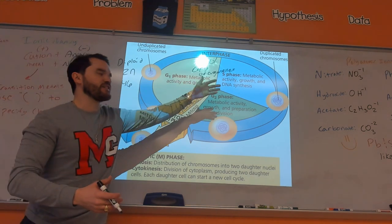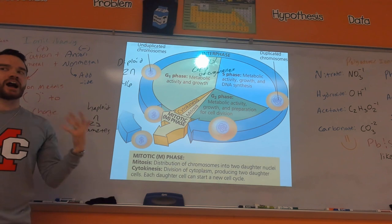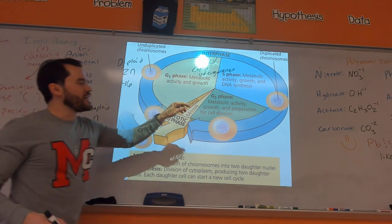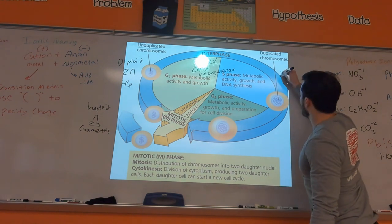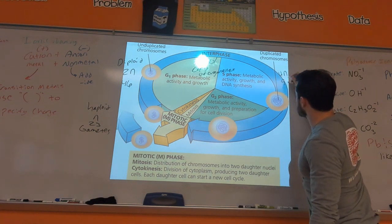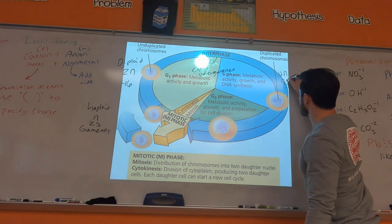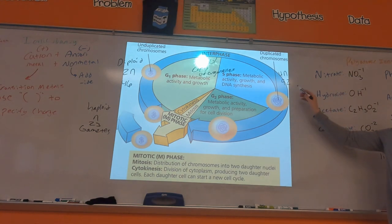In S phase, you're going to make a copy of all the DNA. Otherwise you would drop back down to haploid. So after S phase, you become 4N — if you do 46 times two, you get 92 chromosomes.